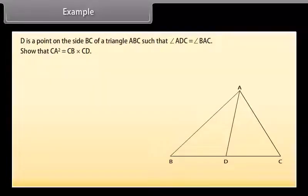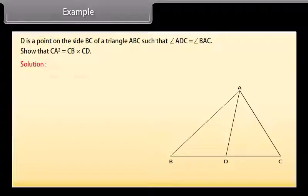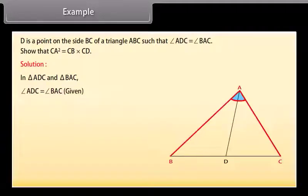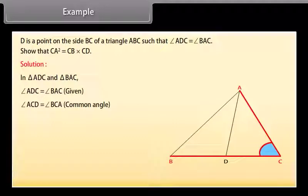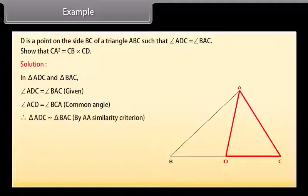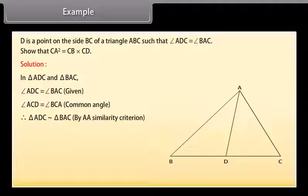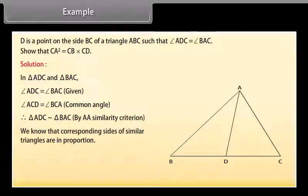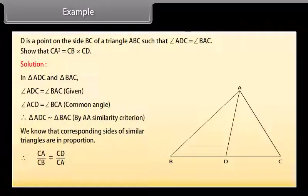D is a point on side BC of triangle ABC such that angle ADC equals angle BAC. Show that CA squared equals CB into CD. Solution: In triangles ADC and BAC, angle ADC equals angle BAC (given) and angle ACD equals angle BCA (common angle). Therefore triangle ADC is similar to triangle BAC by AA similarity criterion. Since corresponding sides of similar triangles are in proportion, CA upon CB equals CD upon CA, which implies CA squared equals CB into CD.